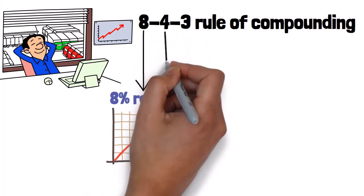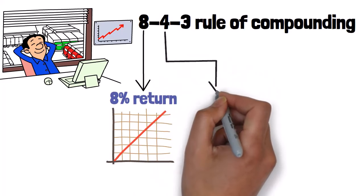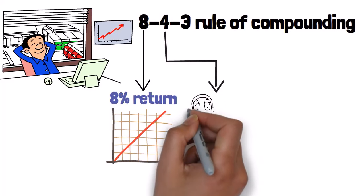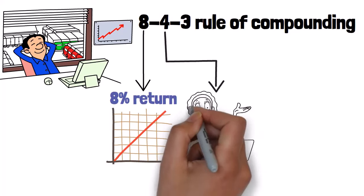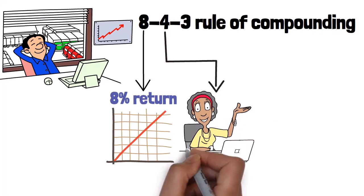On to the 4. This number emphasizes the importance of playing the long game in the investment world. By sticking with your investments for at least 4 years, you're giving them the time they need to weather short-term ups and downs and reach their full potential. It's all about patience and staying the course.